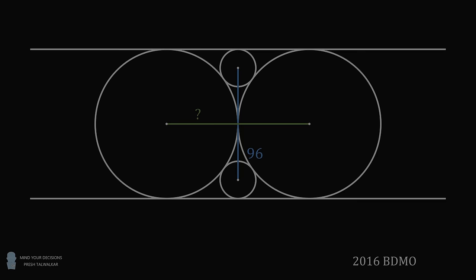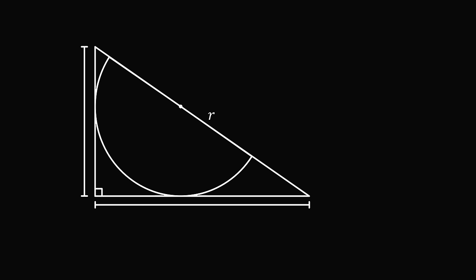Let's solve problem 1. We will derive a general formula. Suppose the right triangle has legs that are equal to A and B. We will prove that R is equal to AB divided by A plus B. In other words, R is half the harmonic mean of A and B. This formula can also be rewritten as 1 over R is equal to 1 over A plus 1 over B.